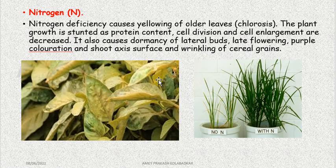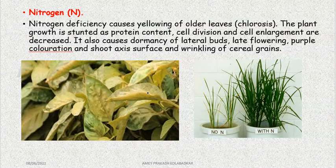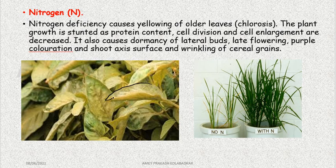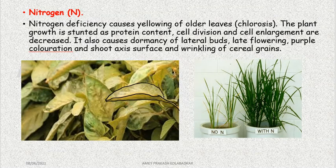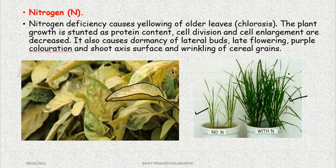The first element is nitrogen. Nitrogen deficiency causes yellowing of older leaves. This is called chlorosis, which means yellowing. If the leaves are yellow, then there is stunted growth in the plant, because the food material availability is reduced. The lamina turns yellow. If you can see it — with nitrogen plant and without nitrogen plant — the plant is stunted as protein content, cell division, and cell enlargement are decreased.